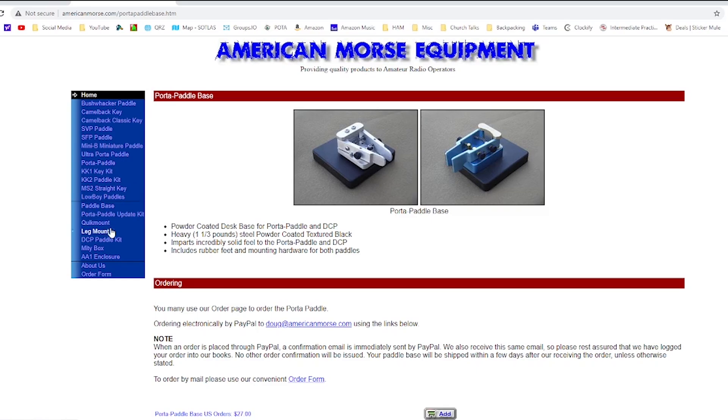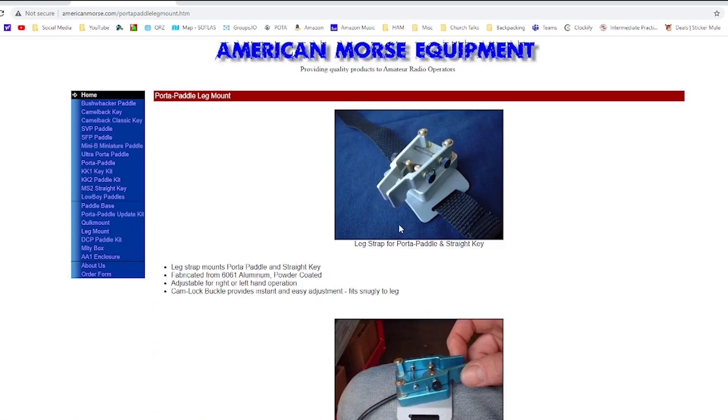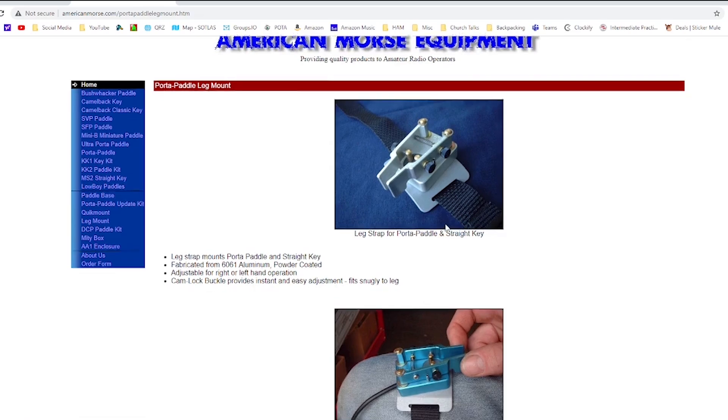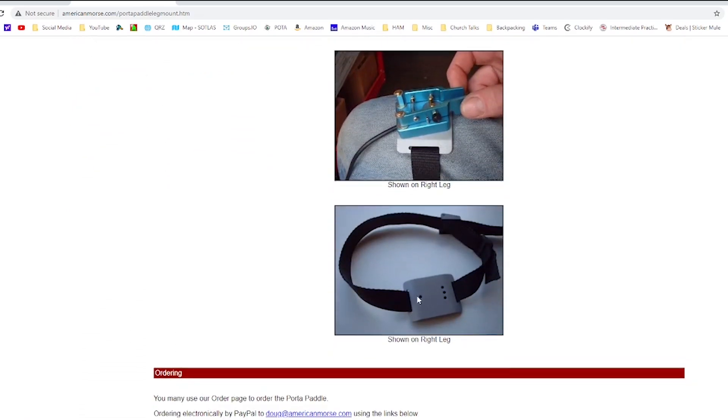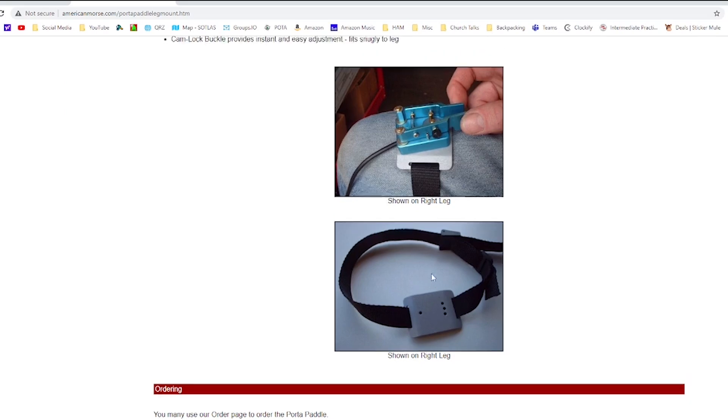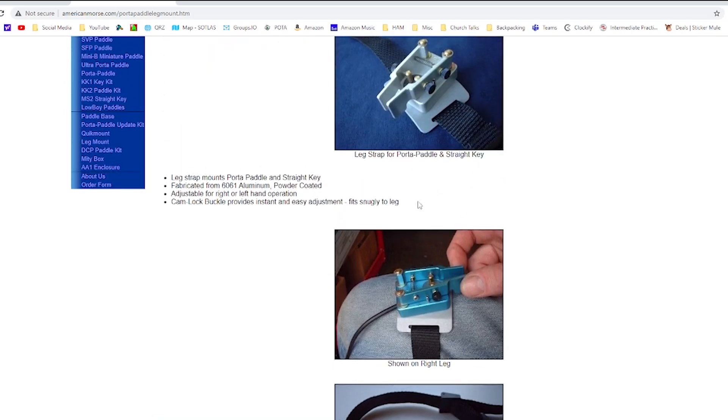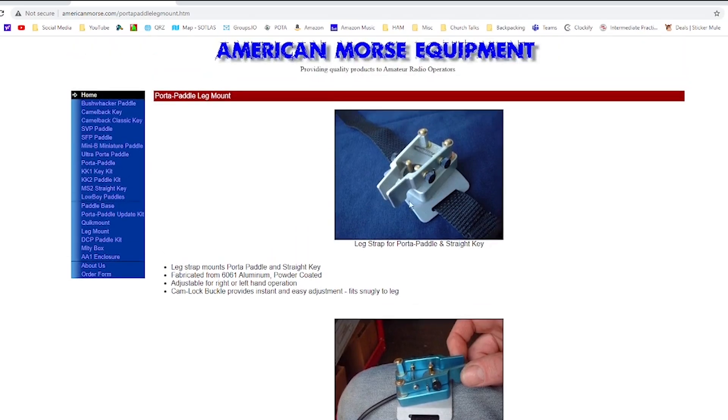There's also, as I mentioned, the leg mount and that allows you to run a strap through a piece of metal that has the four holes in it and then you strap that to your leg. Again it's shown with the port-a-paddle but the ultra port-a-paddle fits this as well.